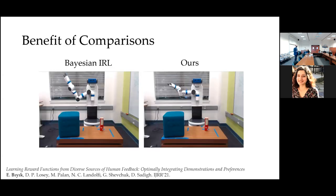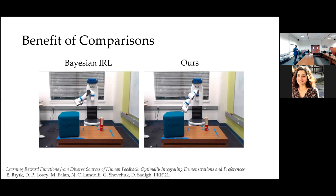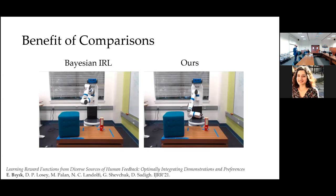We get a final posterior that we can maximize or take the expectation over, yielding an estimate of w — the reward function parameter. On the left is Bayesian IRL with demonstrations only; on the right is ours with demonstrations and comparisons. To make this fair, we equalized the information rate. The Bayesian IRL robot gets stuck trying to avoid obstacles because it learns the avoidance weight is very high. Our method doesn't overweight the obstacle and can actually reach the goal.